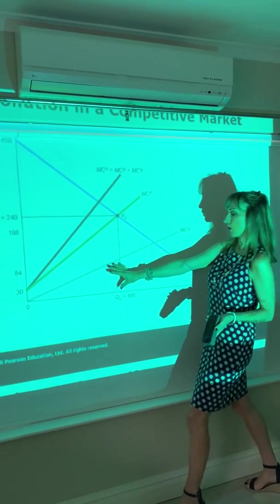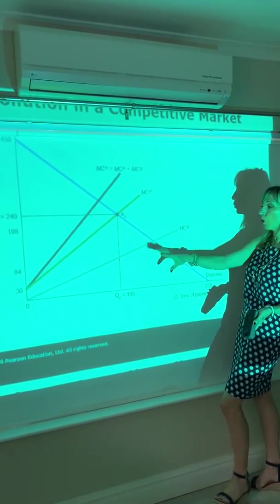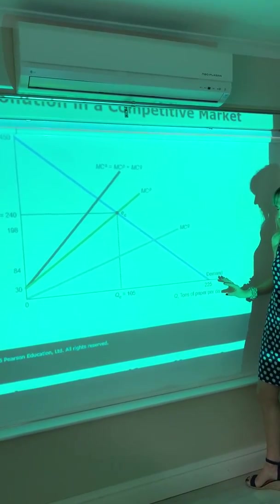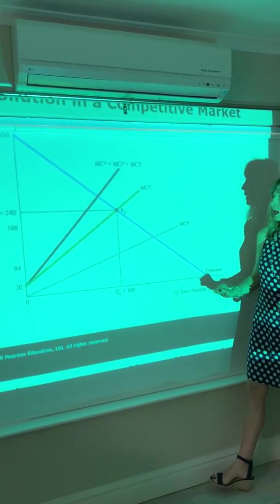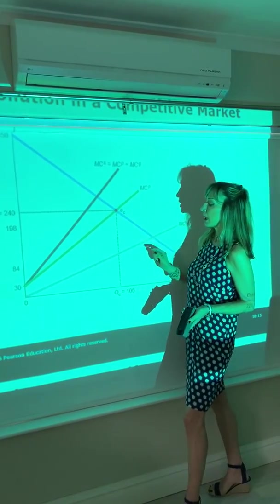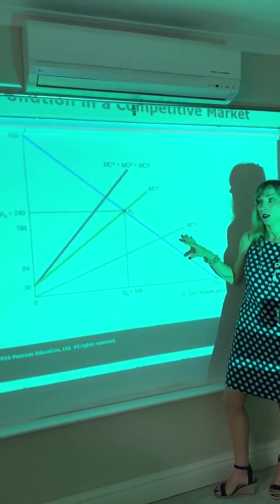The marginal cost of the externality or the pollution rises with increased output of paper. Your private marginal cost ignores that externality cost.